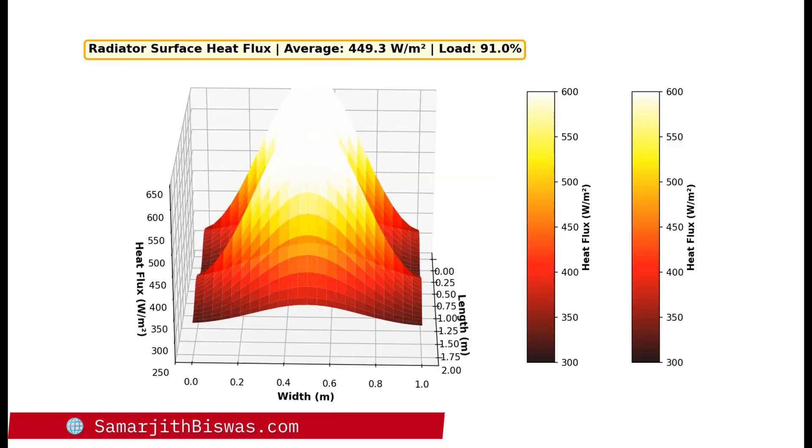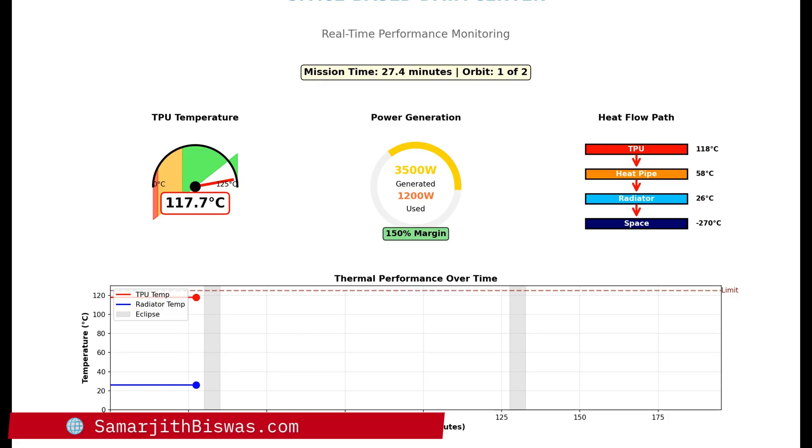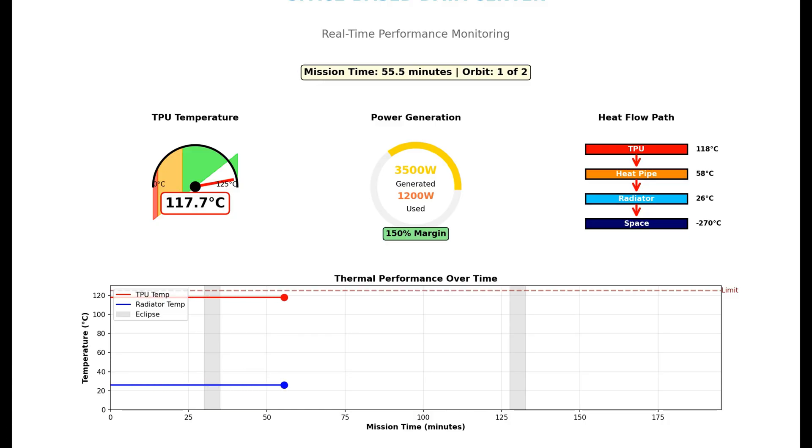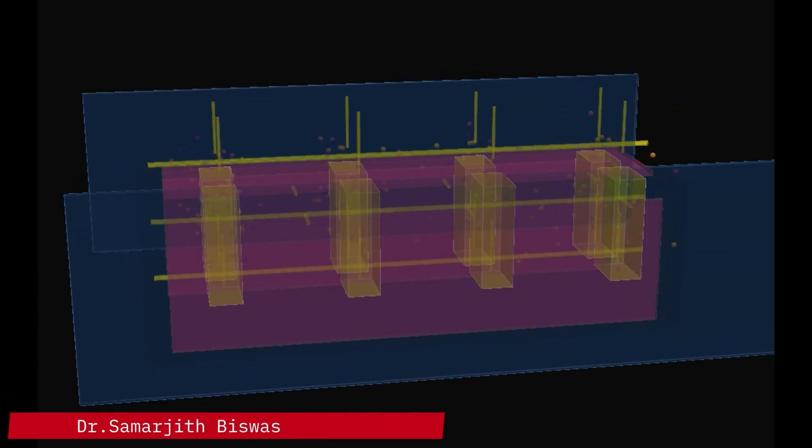Now the economics - this is where it gets really interesting. Break-even happens at $218 per kilogram launch cost. SpaceX is projecting prices in that range by the mid-2030s. Below that price point, space actually becomes cheaper than Earth.